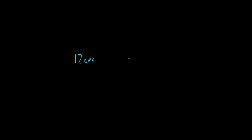If we want to find an equal division of the octave with intervals somewhere between those in 12 EDO and 19 EDO, we can simply add those together to get 31 EDO. All the intervals in 31 EDO will be somewhere in between those in 12 and 19. Let me clarify what I mean.